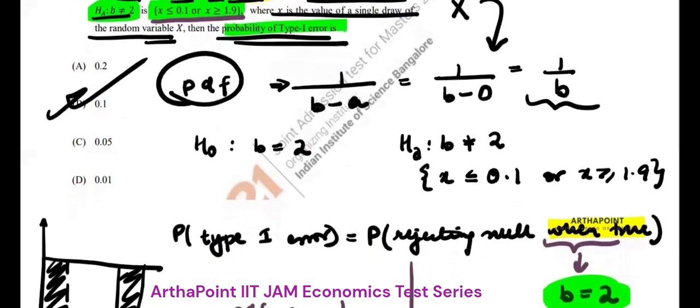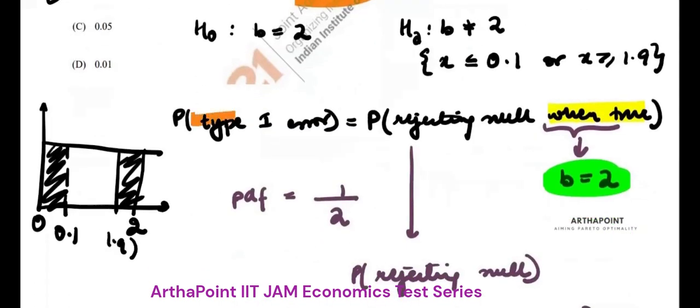What were the points that you had to see here? 1. How to find probability density function of something which is uniformly distributed? Second, what is type 1 error? It is the probability of rejecting null when it is true.